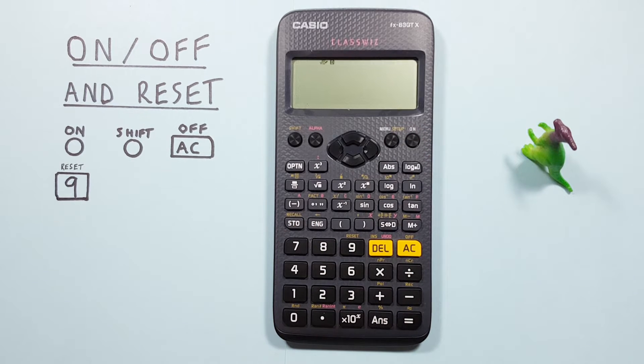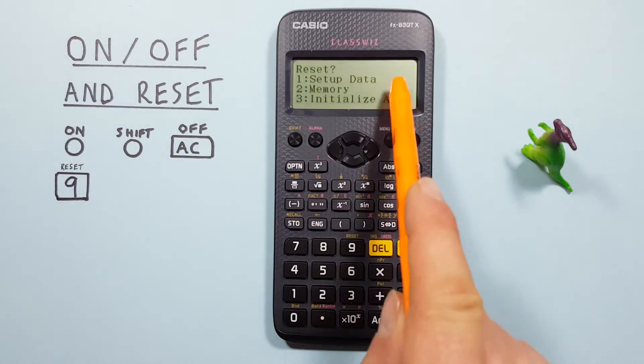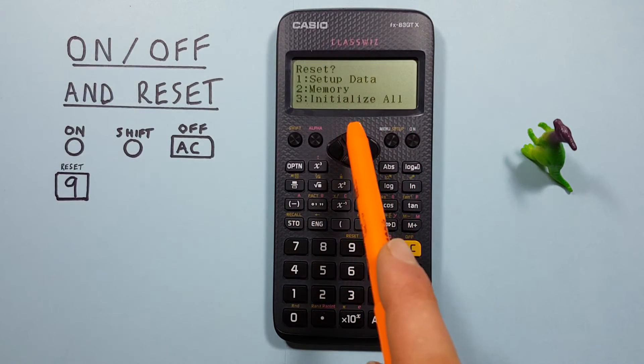Now, if we want to reset our calculator, let's say we've got some strange setting changed, or we want to clear our memory, we can do that by pressing SHIFT and then the 9 key. This brings us to this menu here, where we have three options.